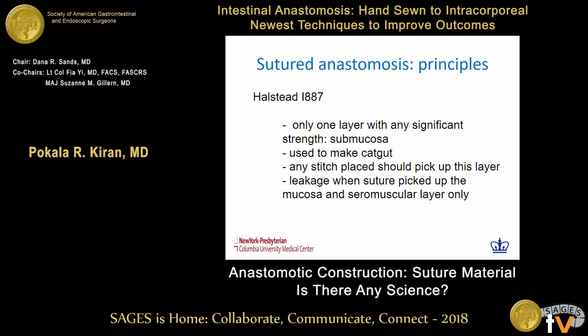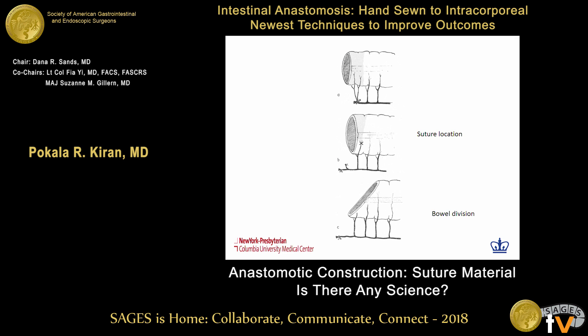Halsted in 1887 showed that it's important to incorporate the submucosa, and based on his work, catgut was developed. Any stitch placed should pick up this layer, and when submucosa is not incorporated with suture bites, there's a greater chance of leak. It is also important to bear in mind the parallel architecture of blood vessels close to the bowel wall on the mesentery — watershed areas exist, and avoiding these with an oblique cut and placing sutures parallel to each other is important in leak avoidance.